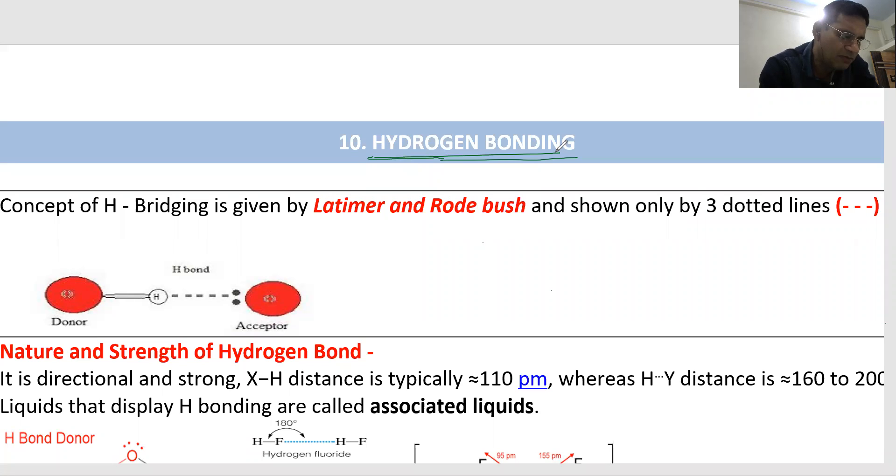This concept of hydrogen bonding, that is hydrogen bridging, was given by Latimer and Rode Bush. See, this is covalent bond, this is coordinate bond, and this is hydrogen bond. For metallic bond there is no such notation, for ionic bond also there is no such notation.